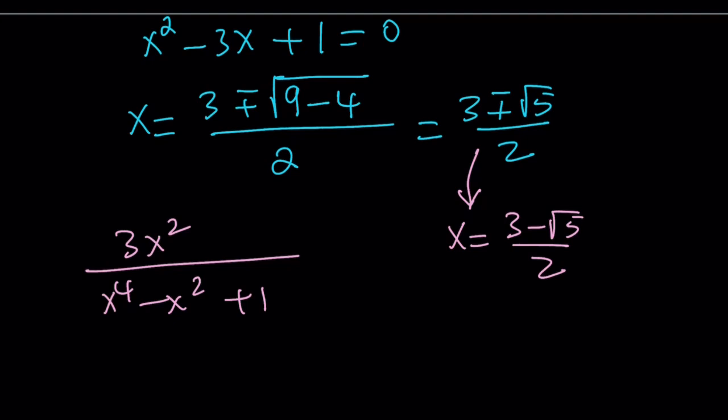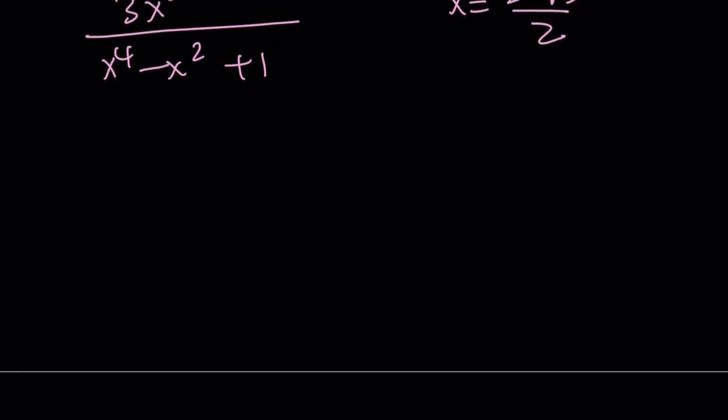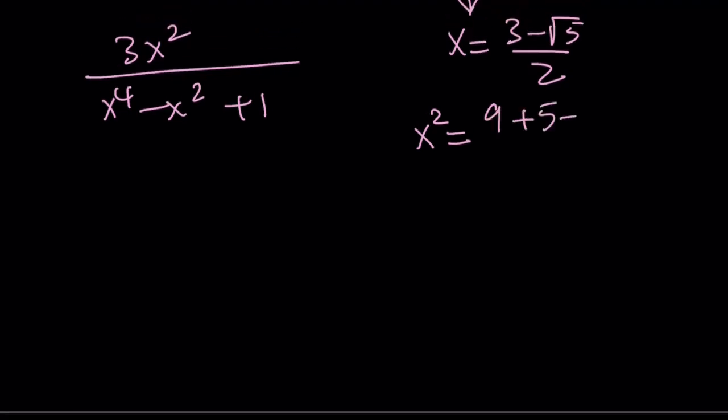Let's evaluate x squared and x to the fourth power separately so we can directly plug it in. Let's find x squared first. I want to square the numerator. That's 9 plus 5 minus 6 root 5 - yes, that's how I usually square differences - and then divide it by 4. This is going to be 14, so we can divide by 2. 14 minus 6 root 5 divided by 2 gives 7 minus 3 root 5 over 2. That's x squared.